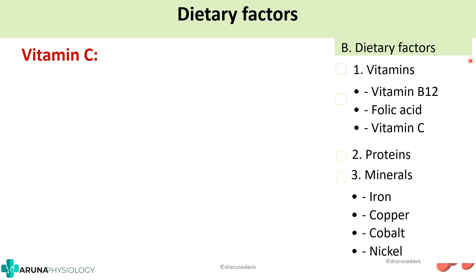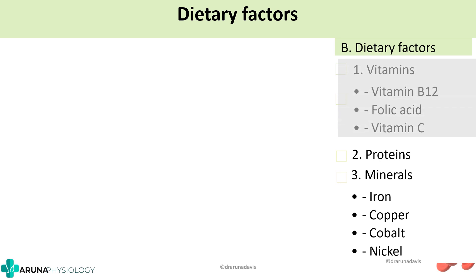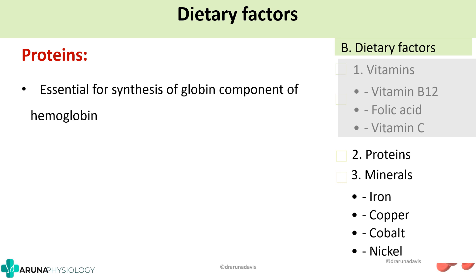In dietary factors, we have seen the role of vitamin B12 and folic acid. Next is the role of vitamin C: it converts ferric ion to the ferrous form. We know that for hemoglobin synthesis we need iron, and it is vitamin C which converts ferric to ferrous form and facilitates iron turnover — meaning the absorption of iron can take place properly only with the help of vitamin C. Regarding proteins, hemoglobin contains the globin part, so there must be adequate amount of globin for synthesis of hemoglobin. That is the role of proteins in erythropoiesis.